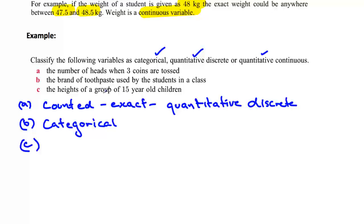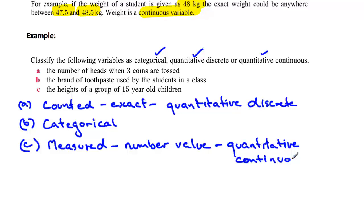And this one, we're looking at the heights of a group of 15-year-old children. Heights are measured. If they're measured, yes, we would say that it's going to have a number value. But, as you know, with measuring, there's some degree of inaccuracy, depending on the instrument that we're using to measure. So we would say, in this case, it would be quantitative and it would be continuous. Thank you.